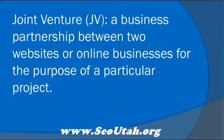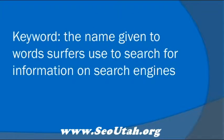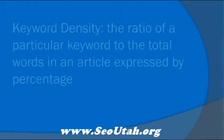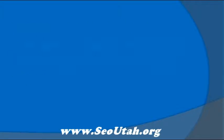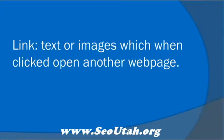Joint Venture, or JV: a business partnership between two websites or online businesses for the purpose of a particular project. Keyword: the name given to words surfers use to search for information on search engines. Keyword Density: the ratio of a particular keyword to the total words in an article, expressed by percentage.